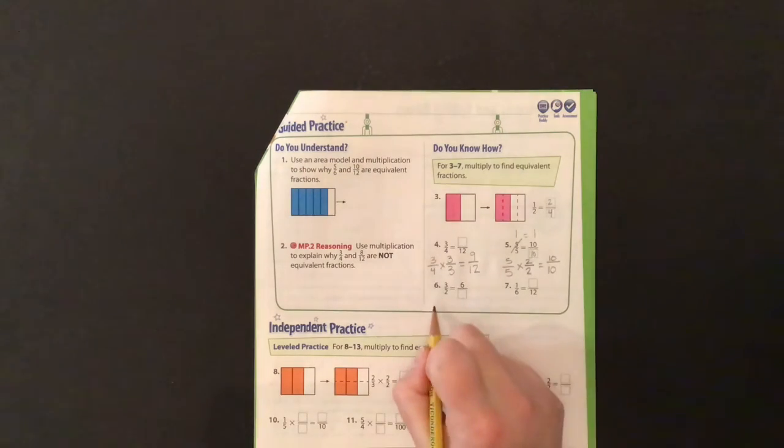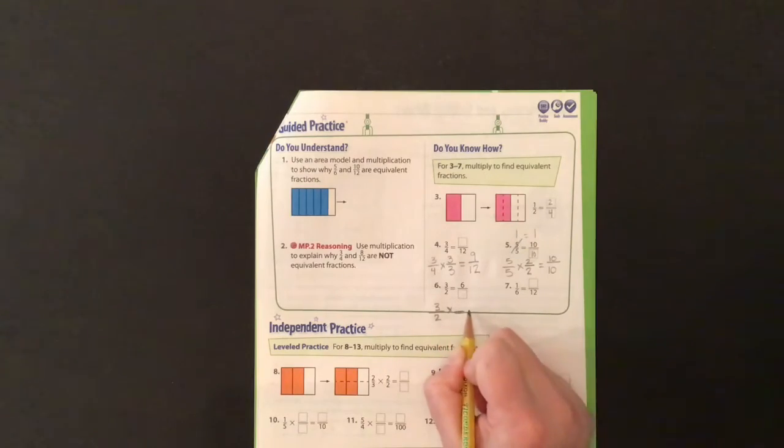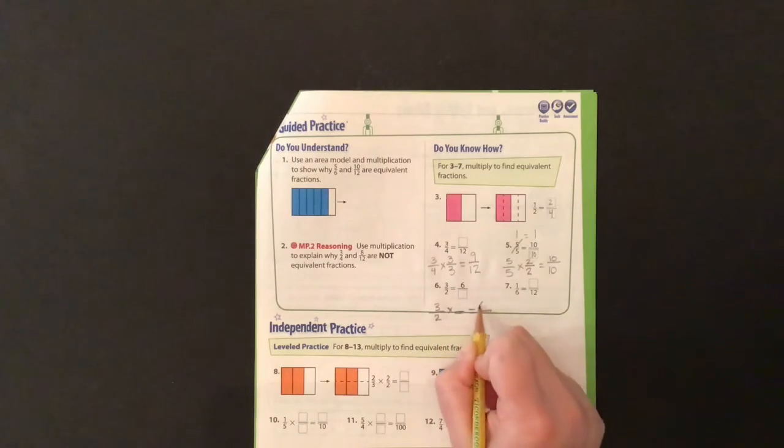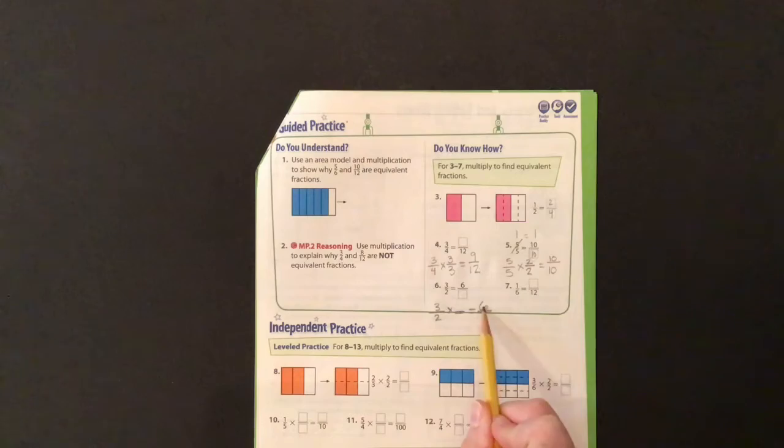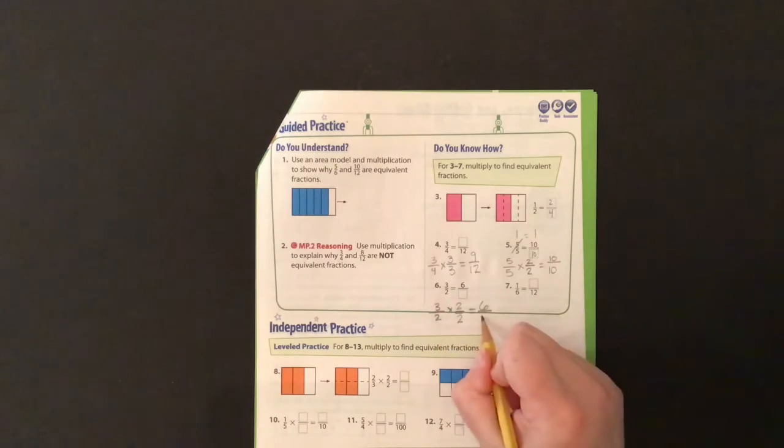Okay, let's keep going. 3 halves times something equals a fraction with 6 as a numerator. I know that 3 times 2 equals 6. So we're multiplying by 2 halves. 2 times 2 equals 4. So this is 6 fourths.